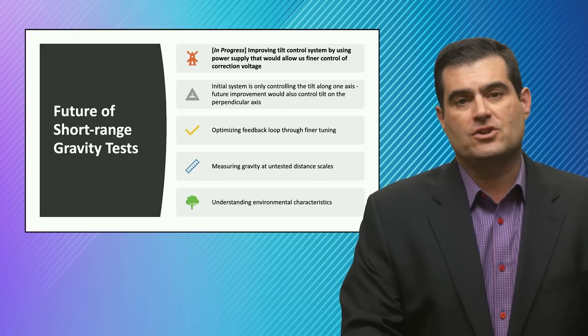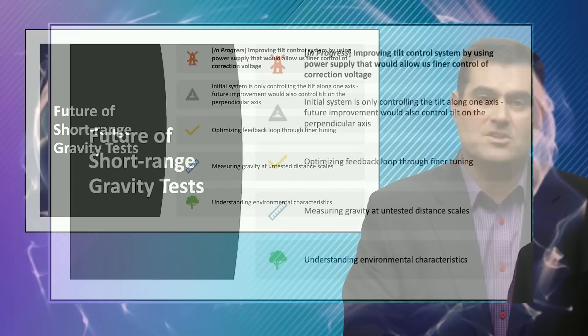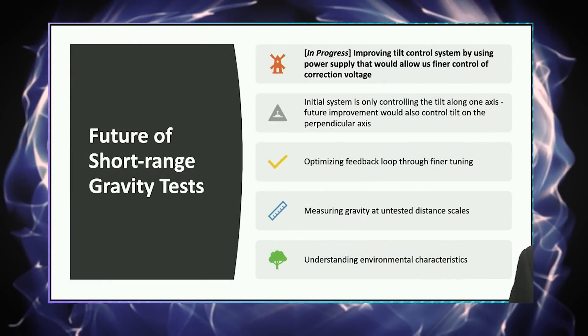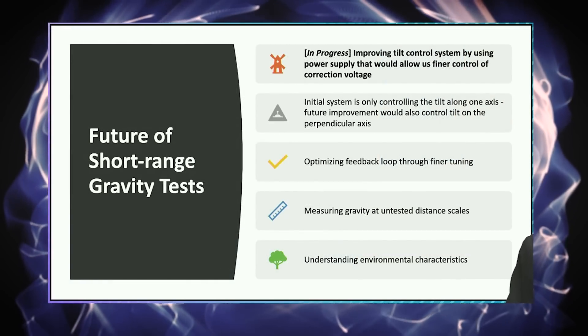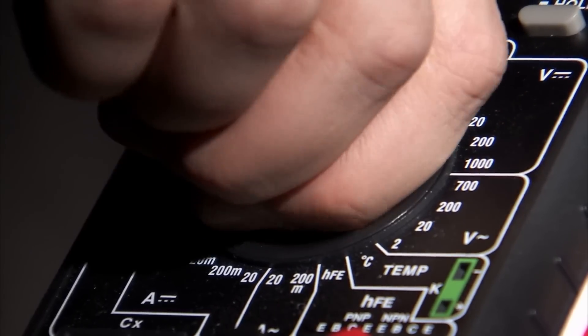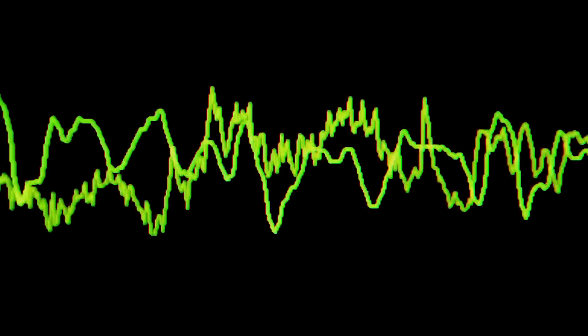So they're still working on this, still trying to improve the tilt over time. The smaller they can get it, the more accurately they can measure both alpha and lambda. So they want to have tighter and tighter feedback control, but you can't over-control. You can risk sending the system into an oscillation that also is unstable and doesn't improve your measurement whatsoever.